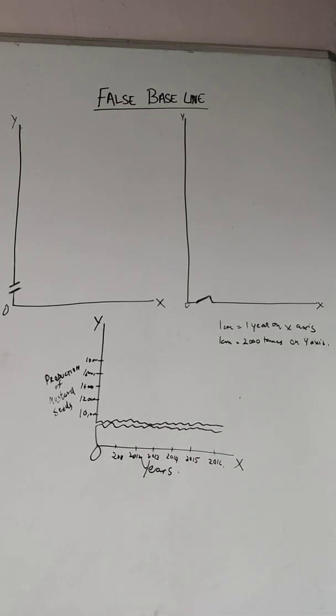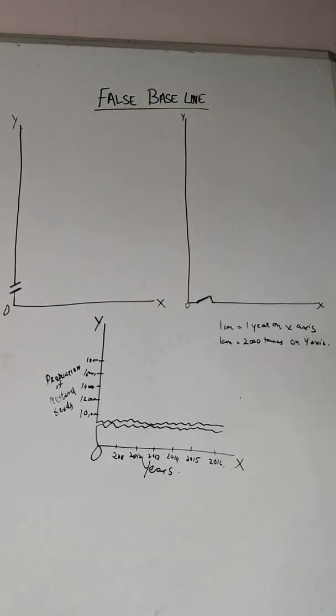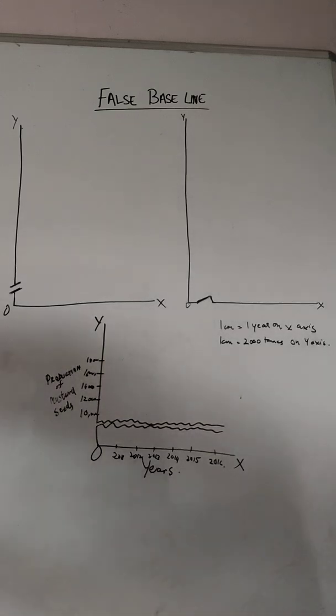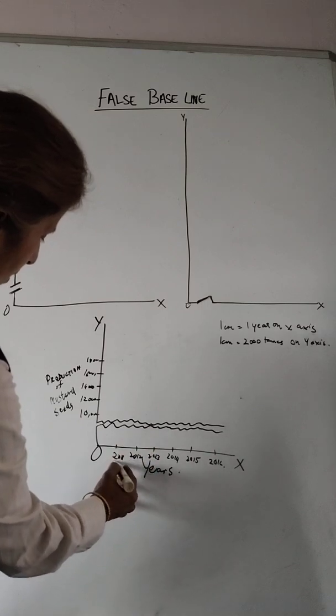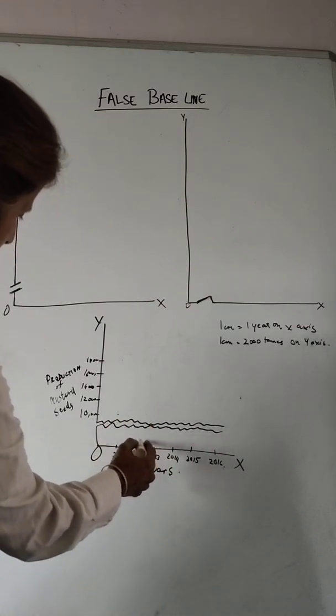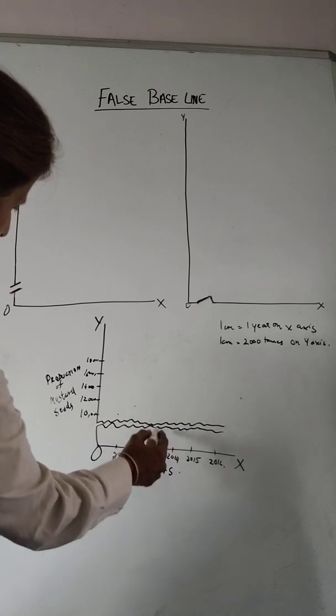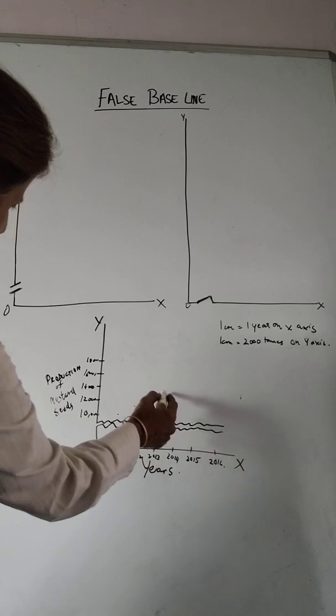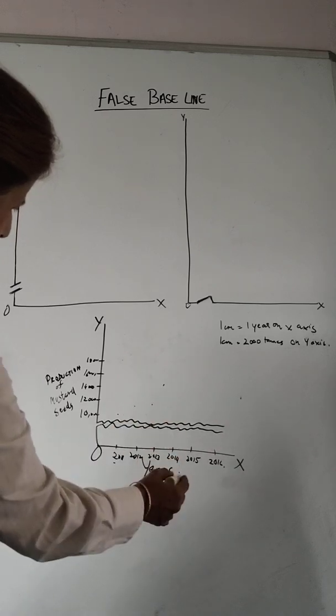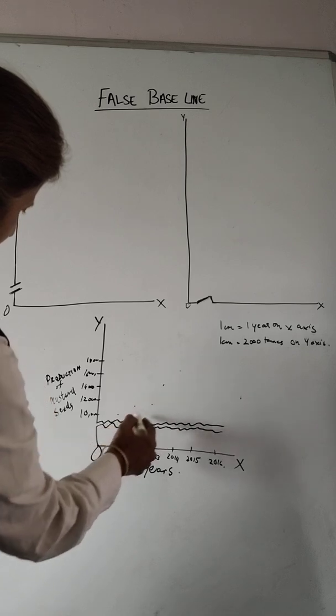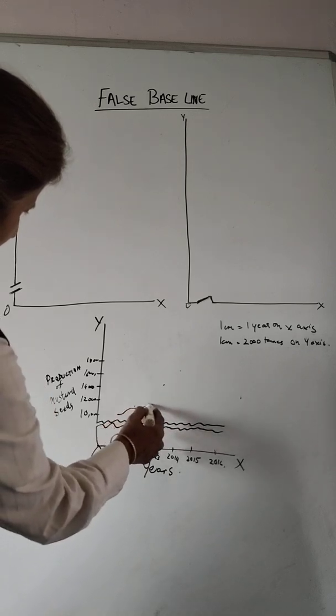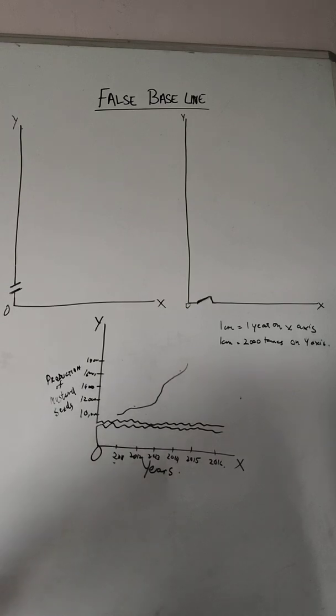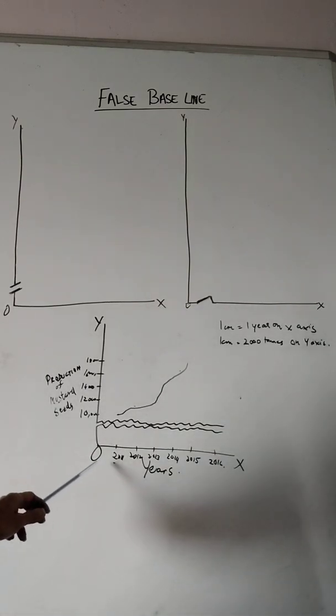For example, in 2011 production was here. In 2012 it was 12,000 and 2013 also it was around a little more than that. 2014 it was 16,000 and 2015 it was 18,000. That's how you join this and you get some curve looking like that.